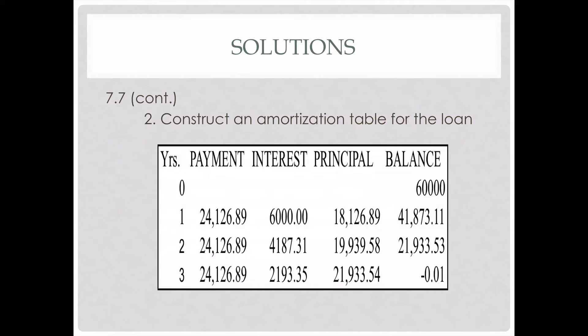Then we need to develop an amortization table. I put the amortization table up here completed and we'll just walk through it. The first thing you can do is just put your payments down. On time period zero you've got a balance of $6,000 — we know that because that's the loan. Then calculate your payments, so put $2,412.89 down, and then we have to fill in the interest, the principal, and the remaining balance to get to approximately zero.